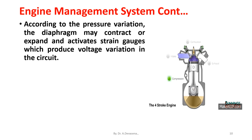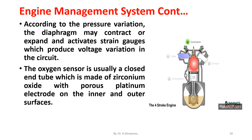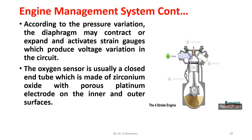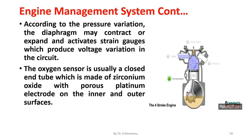The oxygen sensor is usually a closed end tube which is made of zirconium oxide with a porous platinum electrode on the inner and outer surfaces. The sensor becomes permeable to oxygen ions at about 300 degrees Celsius.